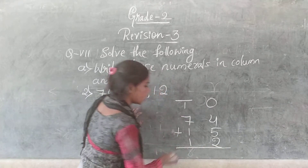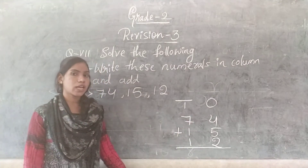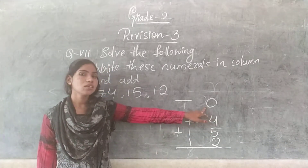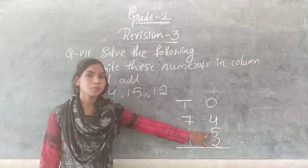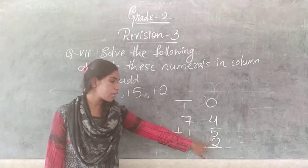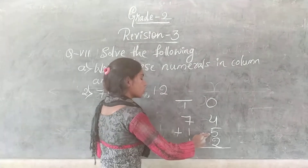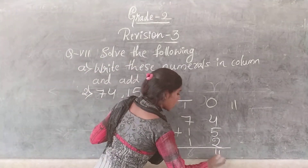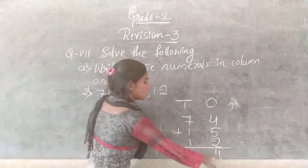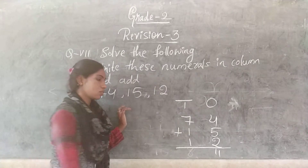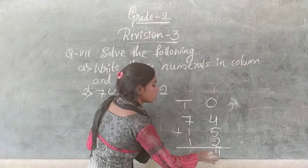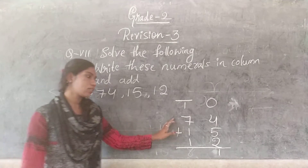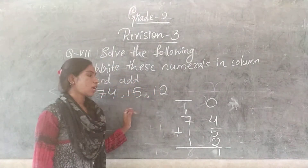Now add all the numbers. Addition starts from the right, so start from the 1s place. 4 plus 5 is 9, and 9 plus 2 is 11. We can't write 11 as is, because the 1 in the 1s place stays and the 1 goes to the 10s place. So keep that 1 as a carry at the 10s place.